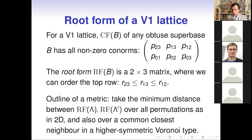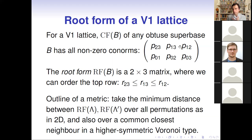For the most generic Type-1 case, all six co-norms are non-zero. We keep the co-form as a 2×3 matrix. Index permutations allow us to order the top row in increasing order, and there is a little remaining freedom to try to order the bottom row — except when two top-row co-norms are equal, giving extra flexibility to make the form more canonical. So we attempt to order the bottom row in increasing order as well.